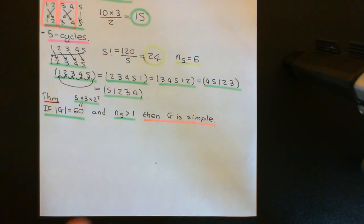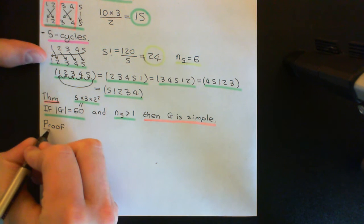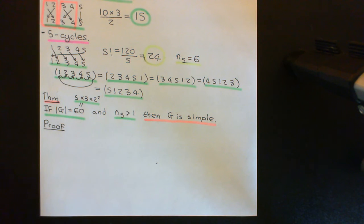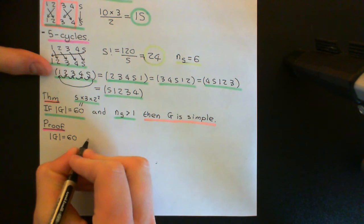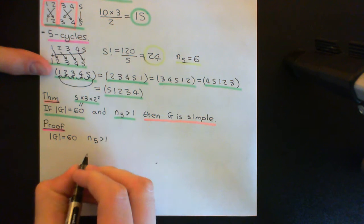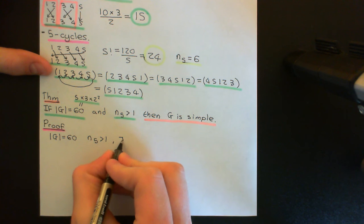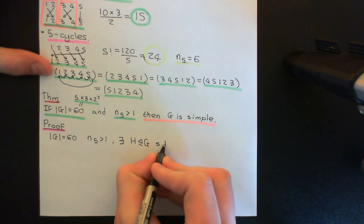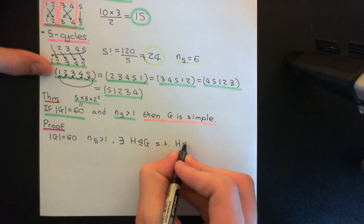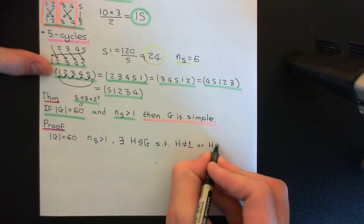So we are going to prove this, and hence prove that A5 is simple. How are we going to prove this theorem? We're going to do it by proof by contradiction. We're going to assume that we have a group G of order 60, and that it has more than one Sylow 5-subgroup. However, G is not simple — meaning there will exist a normal subgroup, capital H, such that H is not equal to the trivial subgroup and H is not equal to G.